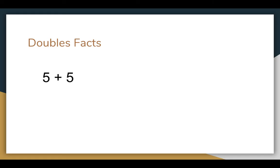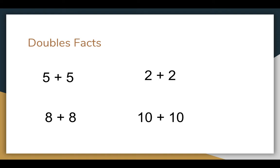Five plus five is a doubles fact because we're adding two of the same number — five and five. Another example would be two plus two, eight plus eight, and ten plus ten. Notice that both digits we're adding are the same exact number. What other doubles facts can you think of?